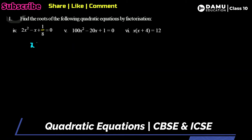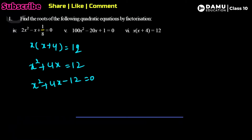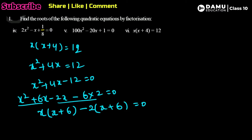The sixth problem is x(x + 4) = 12. Expanding: x² + 4x = 12, so x² + 4x - 12 = 0. To factor, we need two numbers whose product is 12 and difference is 4: 6 × 2 = 12 and 6 - 2 = 4. So we write x² + 6x - 2x - 12 = 0. Grouping: x(x + 6) - 2(x + 6) = 0, giving (x + 6)(x - 2) = 0.